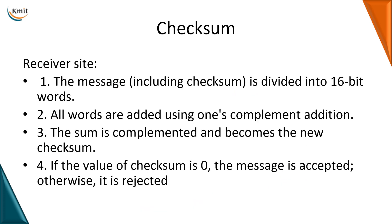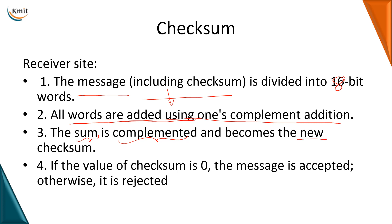At the receiver side, the received message including the checksum is again divided into 8-bit words. All the words including the checksum are added using one's complement addition, and the resulting sum is complemented again to get a new checksum. If the new checksum value is all zeros, the message is accepted — meaning no error occurred. If it is non-zero, then an error has occurred.